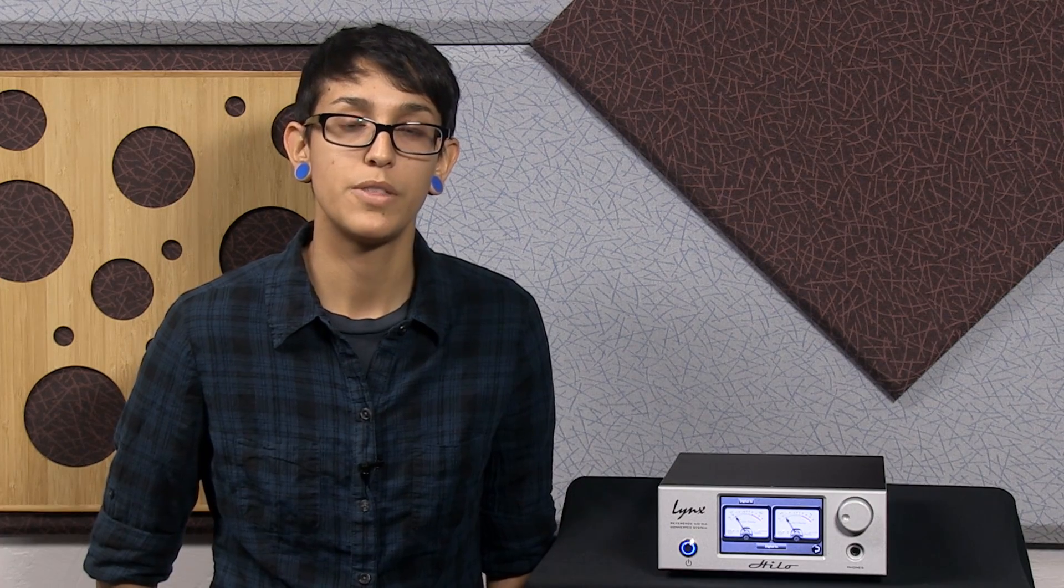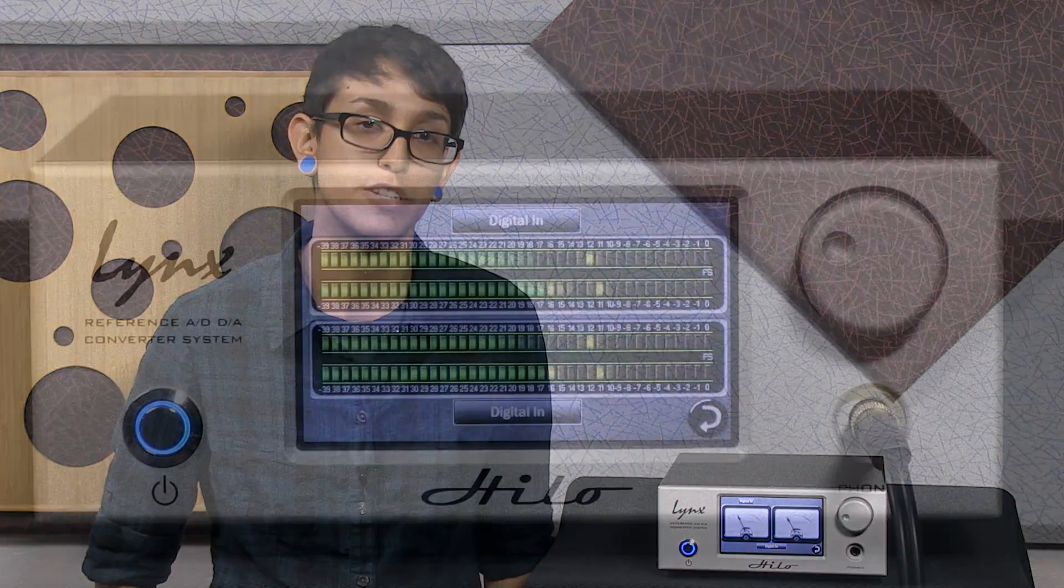Another feature of the Helo that is worth noting is that each of the three pairs of outputs has its own D-to-A converters, so you're able to create three separate mixes from the same inputs. This means that the headphones, monitors, and line outputs are all independent of each other and can be tailored to fit your needs.